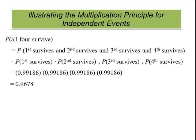So the probability that all four survive means the first one survives and at the same time the second and the third and the fourth. Since we assume all these are independent, we simply multiply them. So this is the same thing as 0.99186 to the fourth power, which is 96.78%.